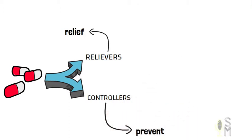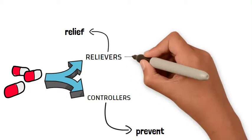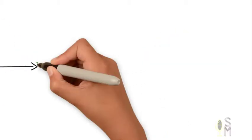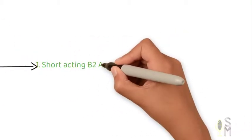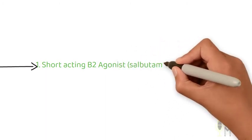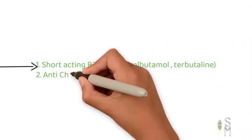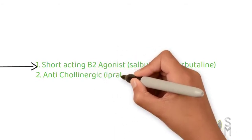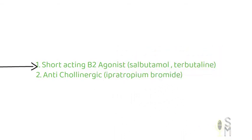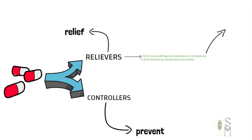Controllers are given to prevent the attack. Examples of relievers are short-acting beta-2 agonists like salbutamol (that is, Ventolin) and terbutaline, or anticholinergics like ipratropium bromide (called Atrovent). These can be administered with an inhaler.